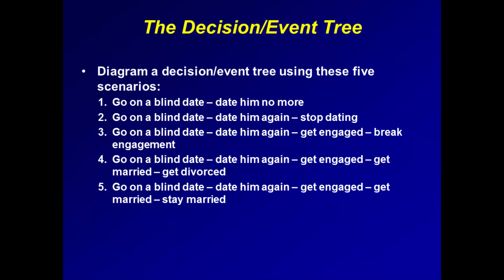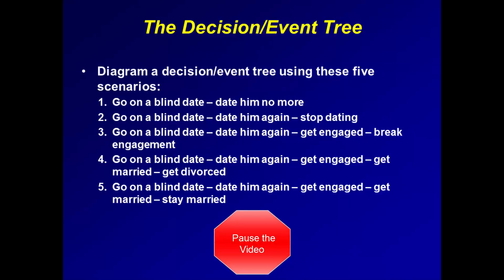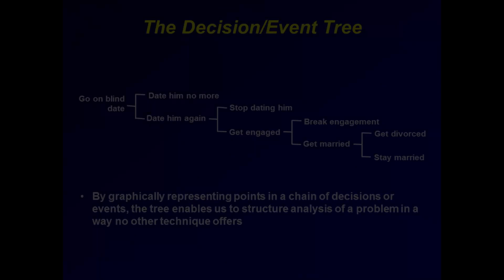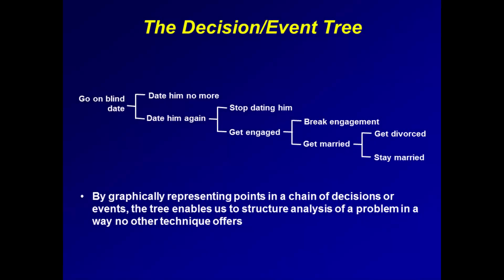Construct a decision event tree to diagram this oversimplified sequence of events following a woman's blind date with a man. Pause the video to give yourself time to construct your decision event tree. Each branch of the tree presents the alternative options that are mutually exclusive — if we pick one, we can't pick the other — and collectively exhaustive, meaning all available options have been considered and there are no other possibilities.